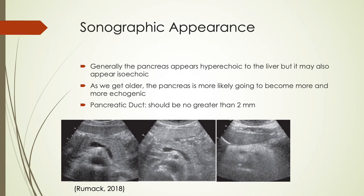When we look at the pancreas, it typically appears hyperechoic to the liver, but it could also appear isoechoic. The pancreas doesn't stand out too well because it is not an encapsulated organ. As we get older, the pancreas tends to become more echogenic because it stores more fat. The pancreatic duct should never measure anything greater than 2 millimeters; otherwise it is considered dilated. Our resolution is getting better, so we can typically see the pancreatic duct more often now.